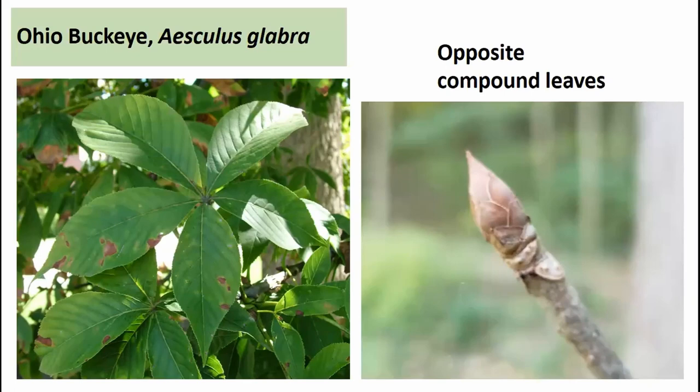Ohio buckeye has opposite palmately compound leaves, typically five leaflets radiating from one point at the end of the leaf stem. It also has a relatively large terminal bud that looks almost like snake scales. If you scrape the bark or break a twig, it has a skunky odor. Relatively large leaf scars are visible on the twig, often indicating a large compound leaf.